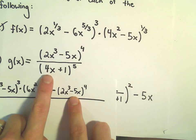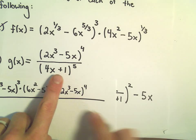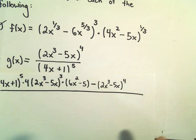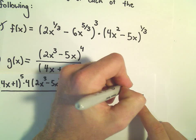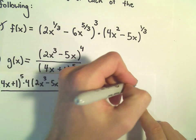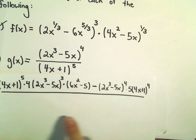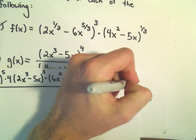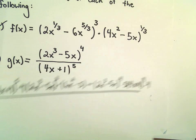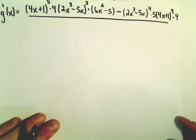So minus the numerator, and now we have to take the derivative of the denominator. The 5 will just come out front, we'll leave the inside alone, so 4x plus 1 to the 4th, and then we multiply by the derivative of the inside, which gives us a multiplication by 4.